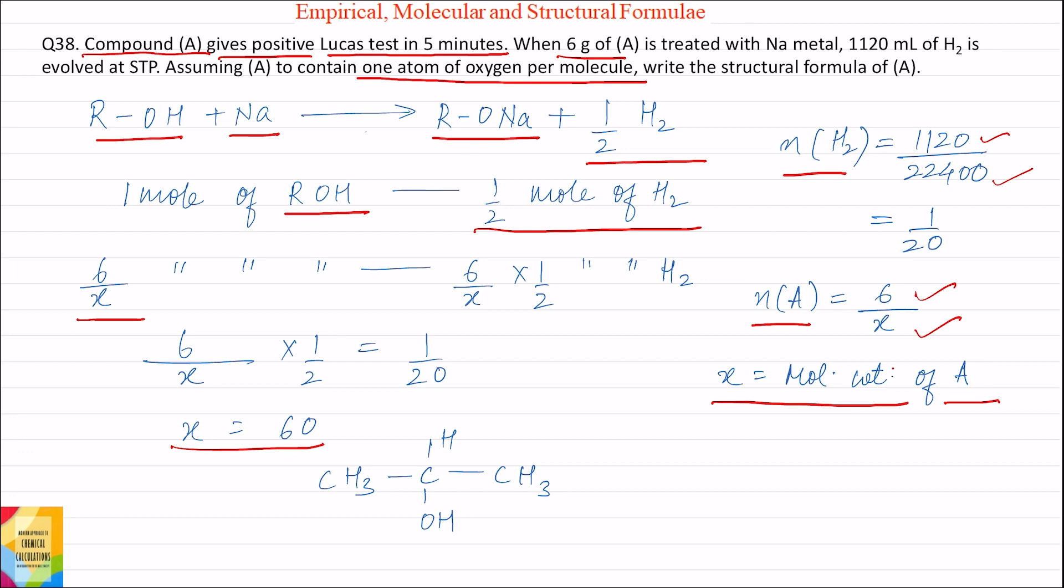The simplest secondary alcohol is CH3-CHOH-CH3. If we find the molecular weight of CH3-CHOH-CH3, it equals 60. Therefore, the given compound A is a secondary alcohol with the formula CH3-CHOH-CH3.